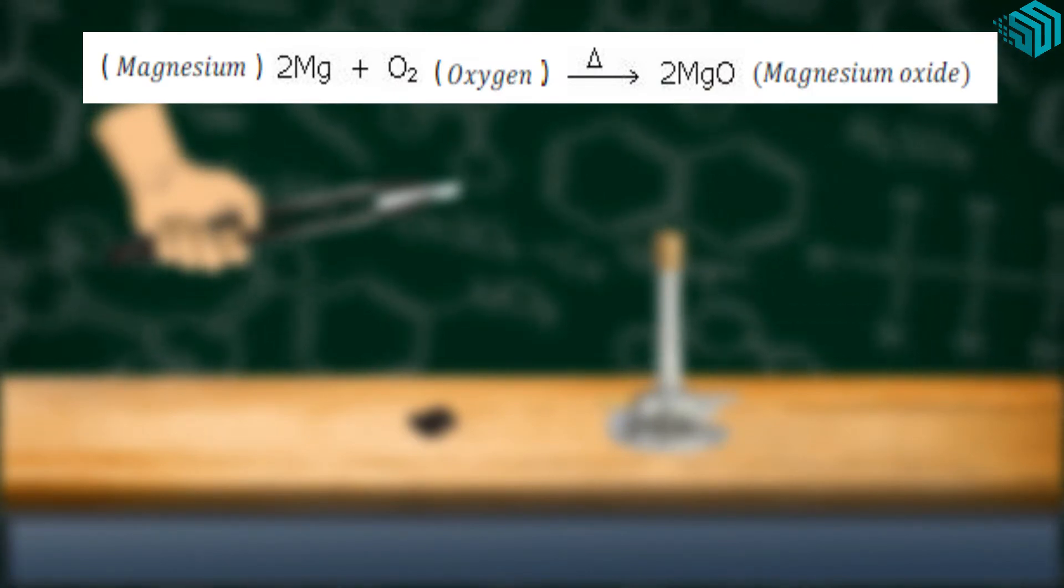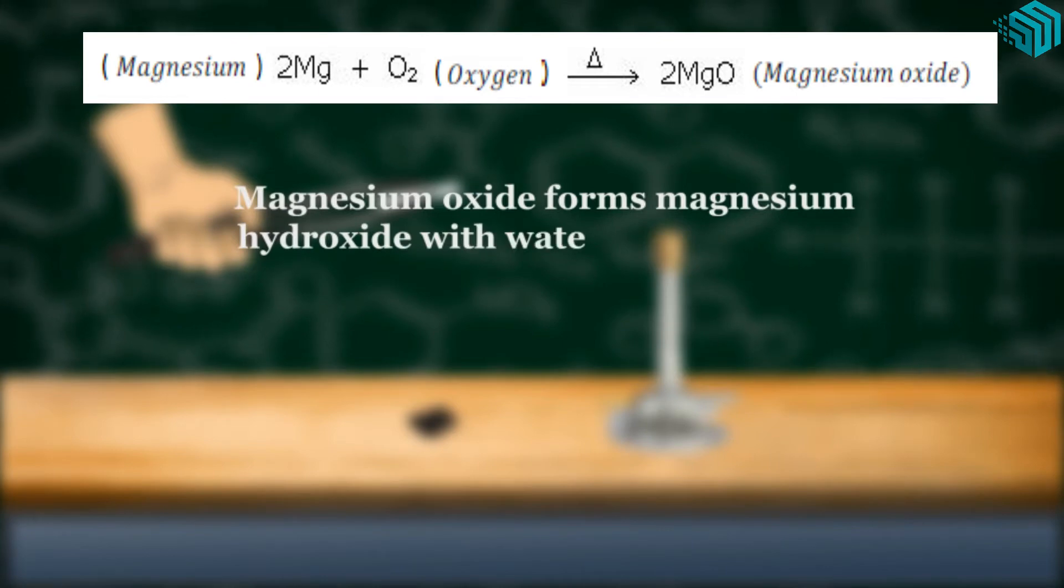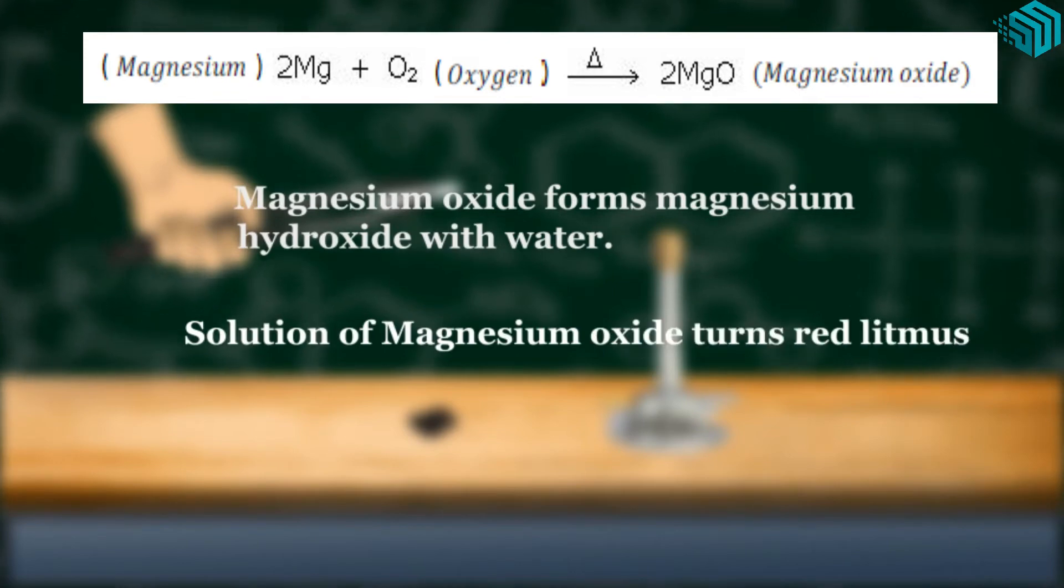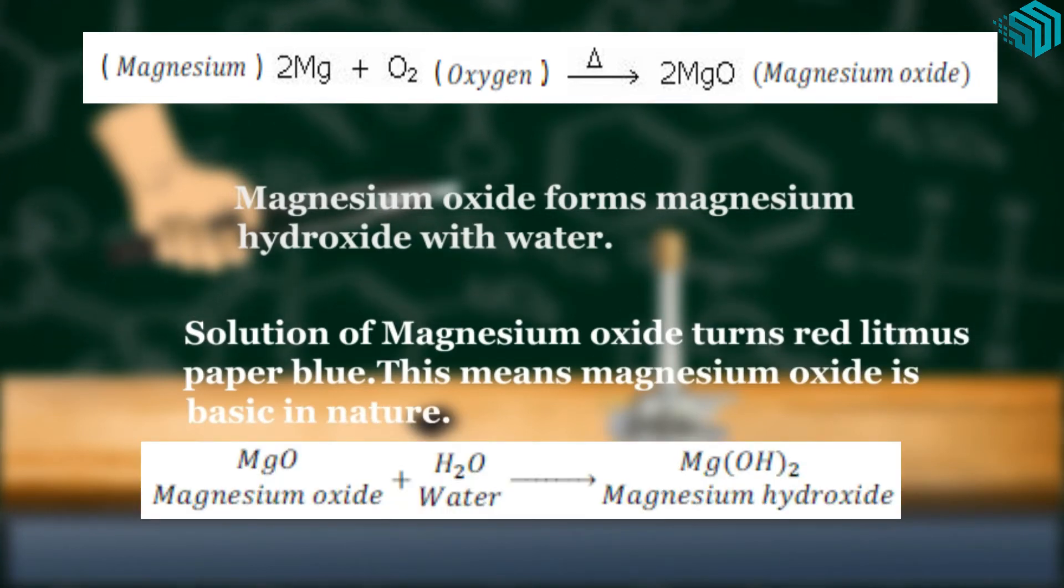Magnesium oxide forms magnesium hydroxide in water. This means magnesium oxide is basic in nature.